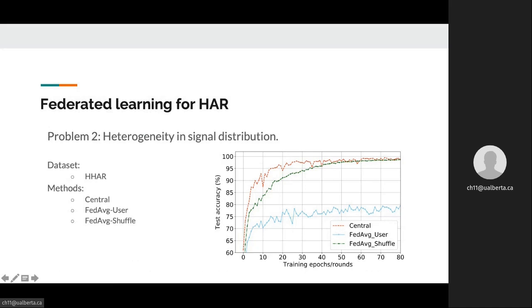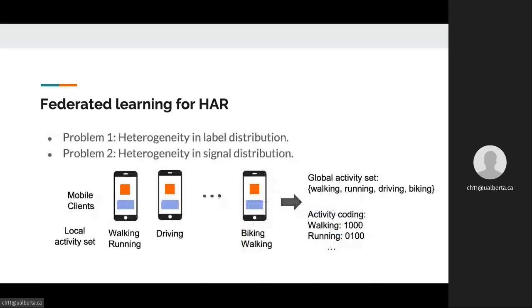The only difference between the two federated learning schemes is that federated average user has heterogeneity in signal distribution across different users. As shown in the figure, without heterogeneity in label and signal distribution, federated average is able to approximate the centrally learned model. However, when heterogeneity in signal distribution exists, we get substantial performance degradation in prediction accuracy from over 97% to less than 8%.